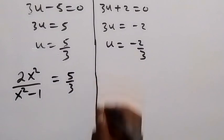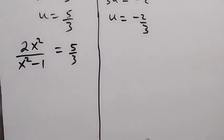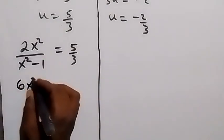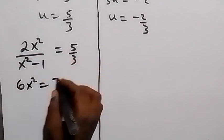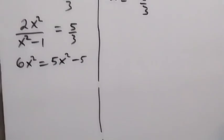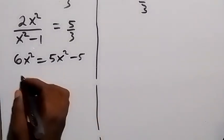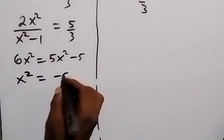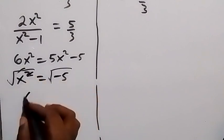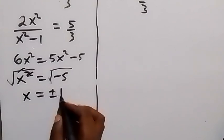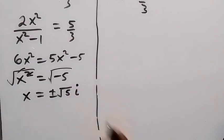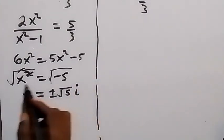Now substituting back u = 2x²/(x²-1) = 5/3. Cross multiplying: 6x² = 5(x²-1), giving 6x² = 5x² - 5, so x² = -5. Taking the square root of both sides gives x = ±√5 × i, which is a complex number. So we have two solutions: x = ±√5i.